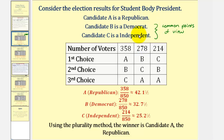Because candidates B and C share common points of view, it is possible that some independents may vote democrat just to avoid the republican from winning. So by independents voting democrat to avoid the republican from winning, this is an example of insincere voting.